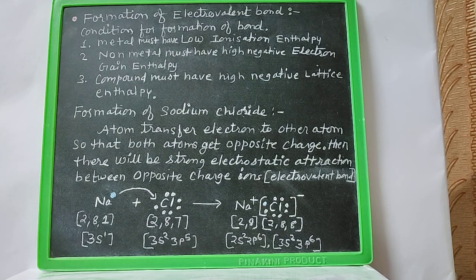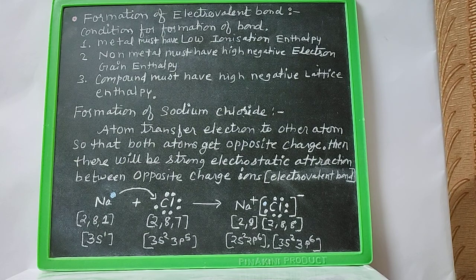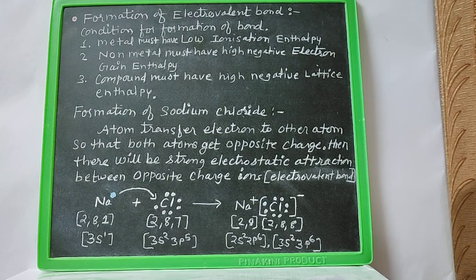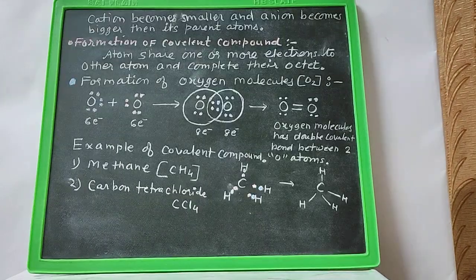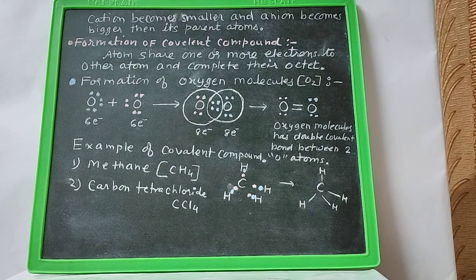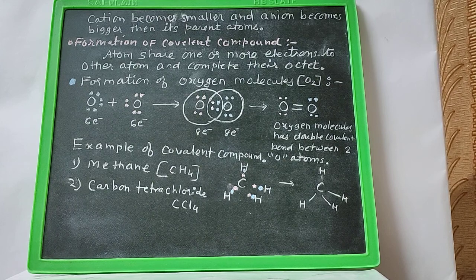When sodium transfers an electron to chlorine, the sodium atom gets a positive charge and the chlorine atom gets a negative charge. There is then a strong electrostatic attraction between the sodium ion and the chloride ion. This is called an electrovalent bond, and sodium chloride is an electrovalent compound. Note that the cation is always smaller than its parent atom, while the anion is bigger than its parent atom.